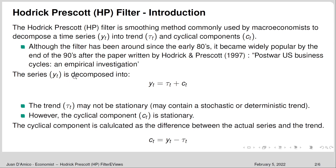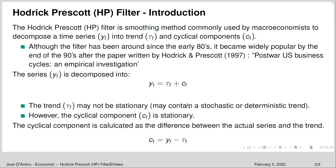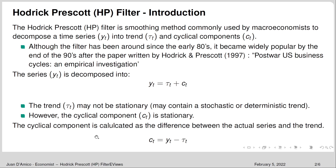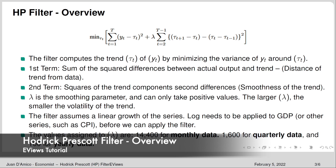What we are doing with the HP filter is decomposing the series YT into a trend and cyclical components. The trend may not be stationary — it can contain a stochastic or deterministic trend. However, the cyclical component is going to be stationary. The cyclical component is calculated as the difference between the actual series and the trend.